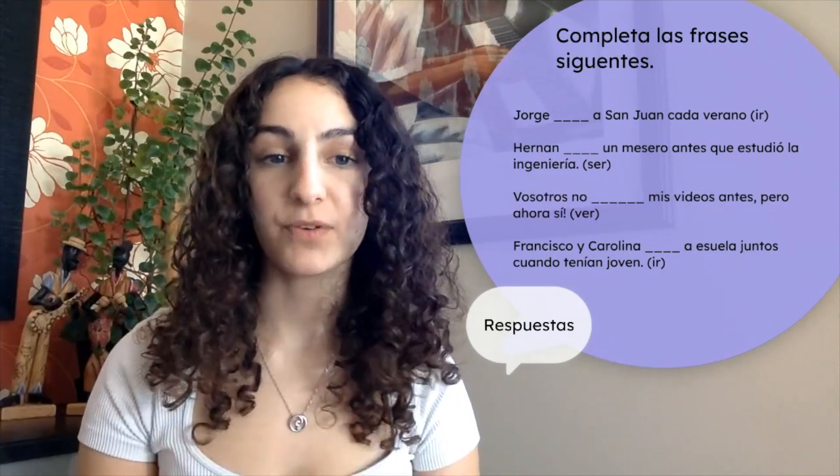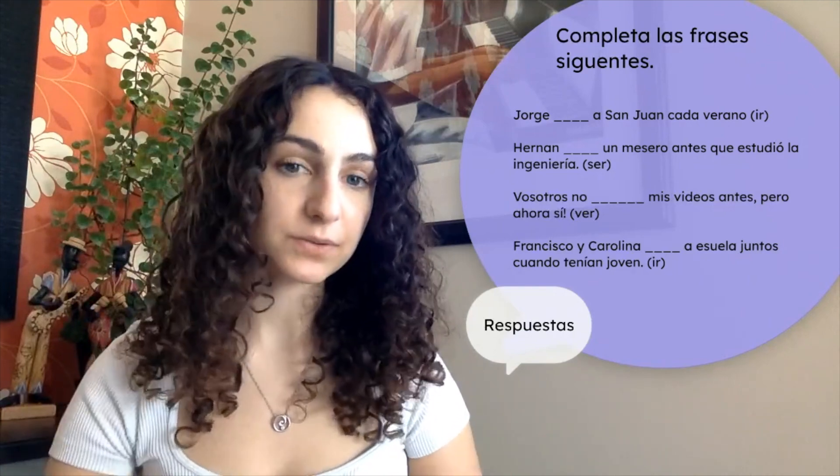La práctica: completa las frases siguientes. Plug in the verb and conjugate it to the imperfect. Tenemos: Jorge ___ a San Juan cada verano — conjugate ir for Jorge. Hernán ___ un mesero antes que estudió la ingeniería — Hernán was a waiter before he studied engineering. Vosotros no ___ mis videos antes, pero ahora sí — before you didn't watch my videos, but now you do. Francisco y Carolina ___ a la escuela juntos cuando tenían joven — Francisco and Carolina went to school together when they were young. Pausa el video y después vamos a las respuestas.